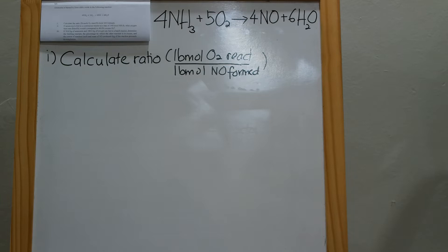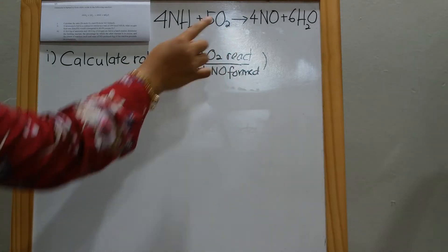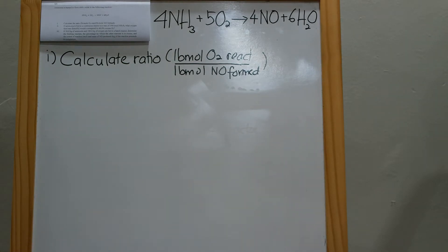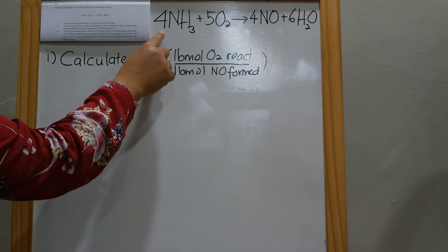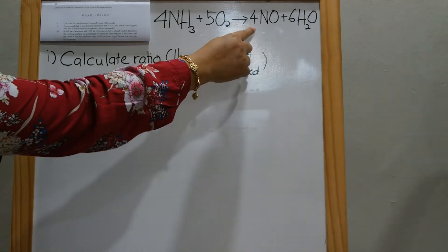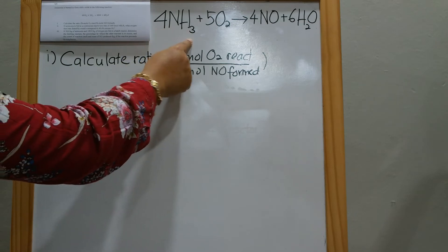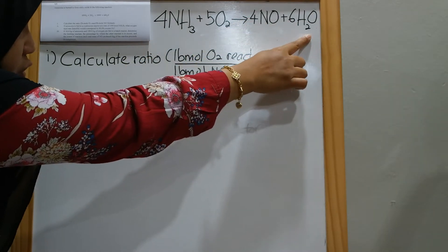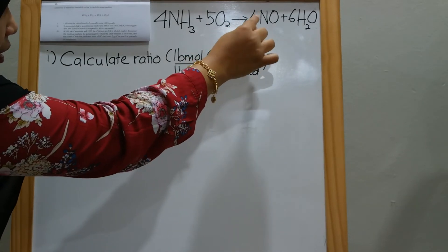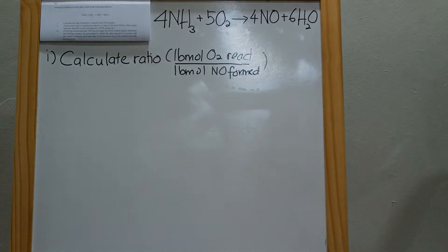The first part asks you to calculate the ratio of pound-mole of O2 reacted over pound-mole of NO formed. Before solving, you must check that the equation is stoichiometrically balanced. We have 4N on each side, 12H on each side, and 10O on each side, so the equation is stoichiometrically balanced.